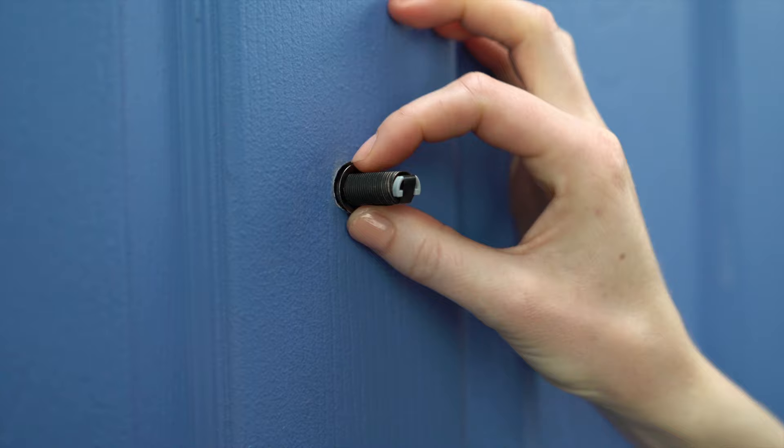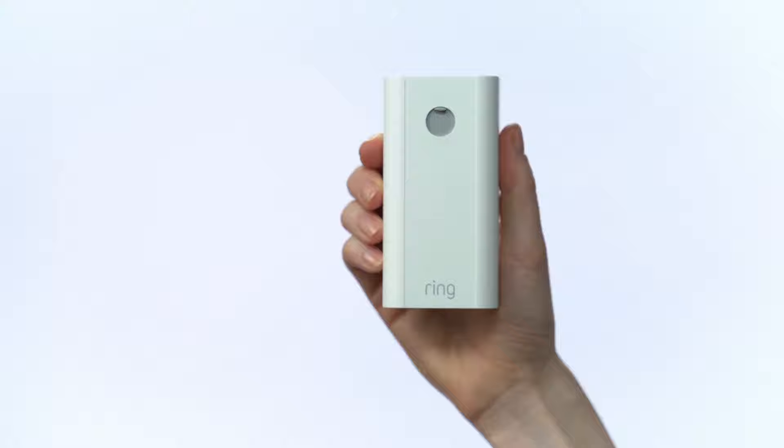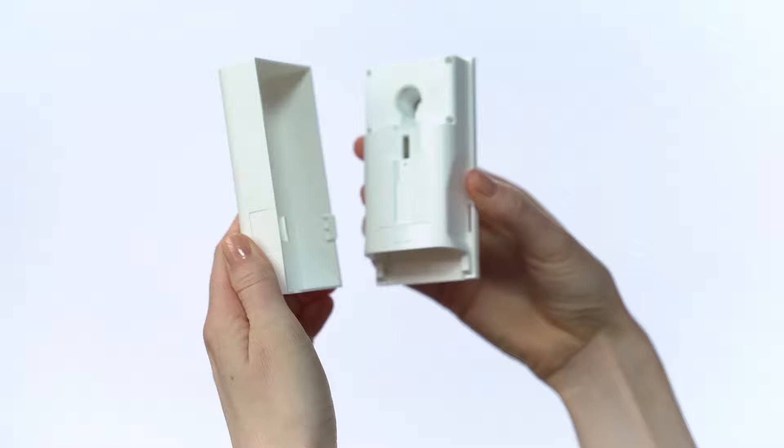Now, let's set up the indoor half of your peephole cam. Hold the rear assembly by the thin edge of its body. Then, grasp and pinch the cover here and pull them apart. You can set the cover aside for now.